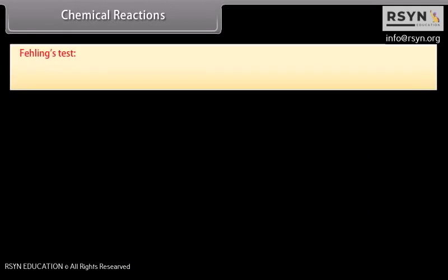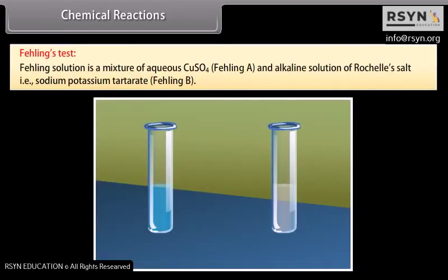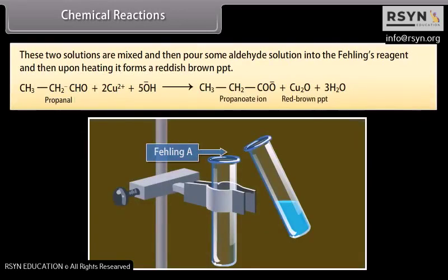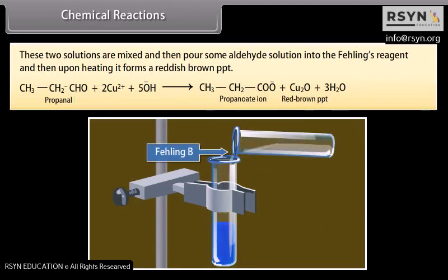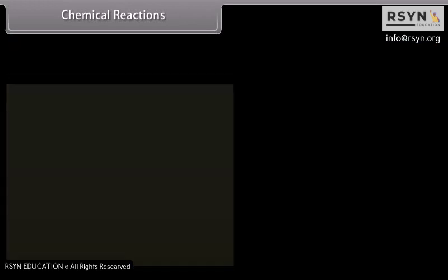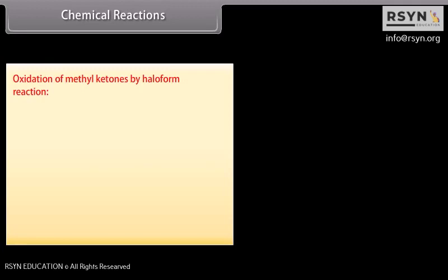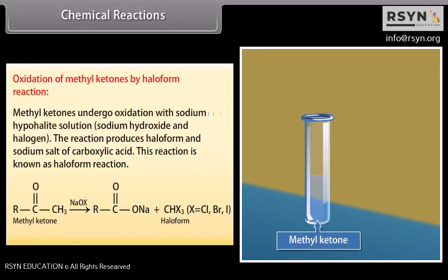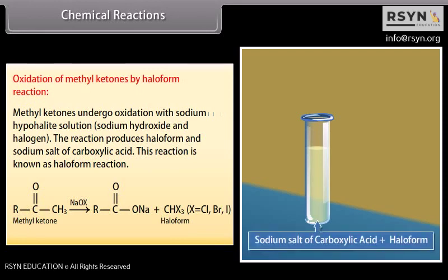Fehling's test: Fehling solution is a mixture of aqueous copper sulfate (Fehling A) and alkaline solution of Rochelle's salt, i.e., sodium-potassium tartrate (Fehling B). These two solutions are mixed, then some aldehyde solution is added, and upon heating it forms a reddish-brown precipitate. Oxidation of methyl ketones by haloform reaction: methyl ketones undergo oxidation with sodium hypohalite solution, i.e., sodium hydroxide and halogen. The reaction produces haloform and sodium salt of carboxylic acid, and is known as the haloform reaction.